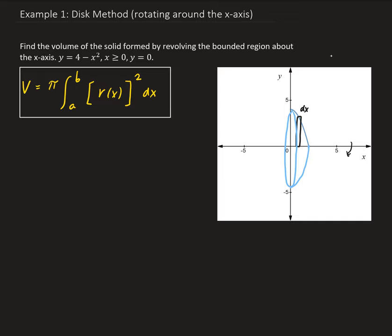So we can go ahead and set up the integral. Our volume is going to be equal to pi times the integral from a to b. So our lower bound is 0.